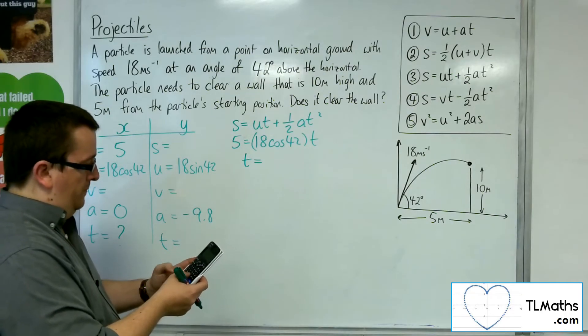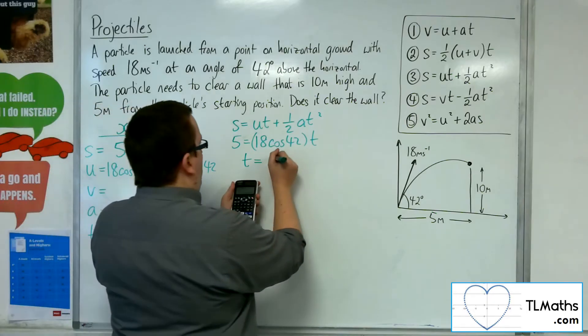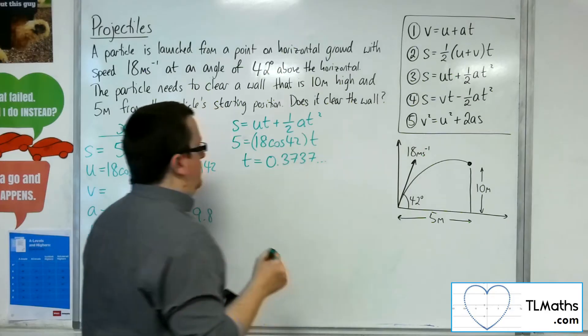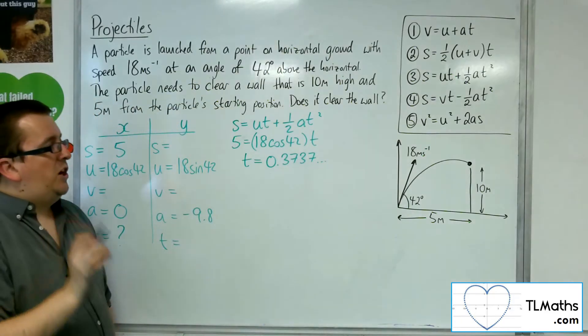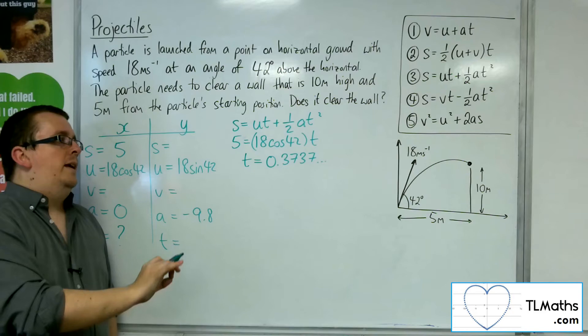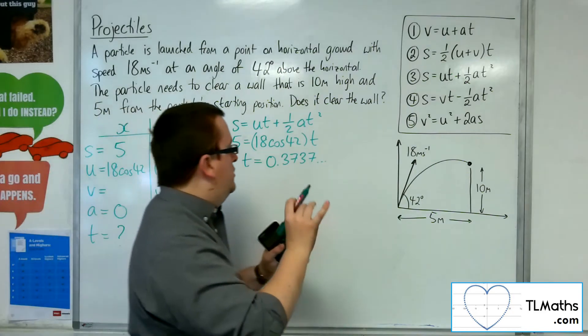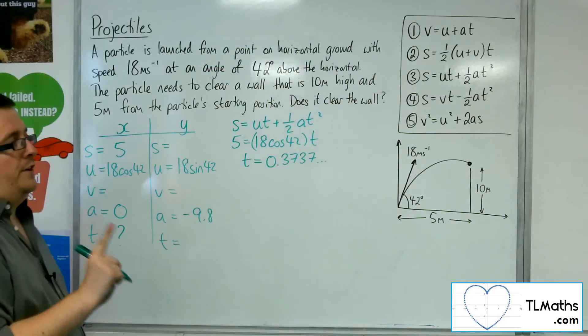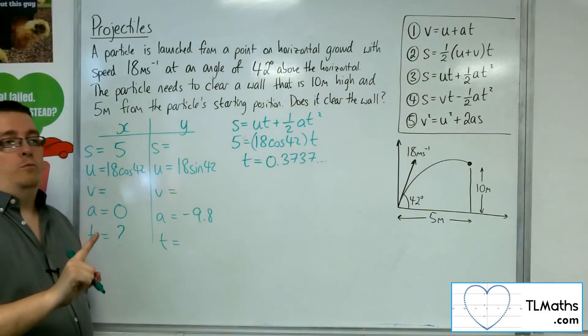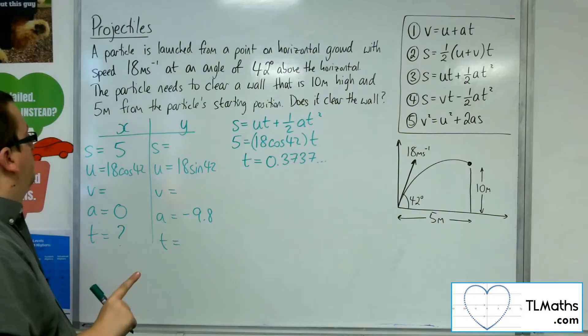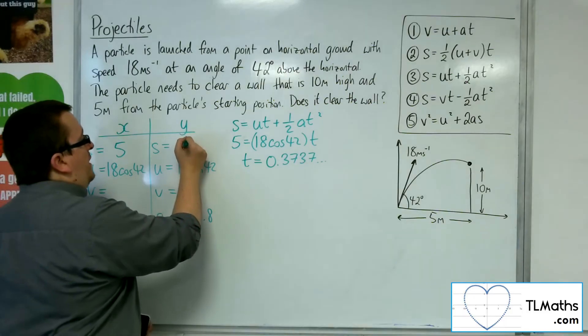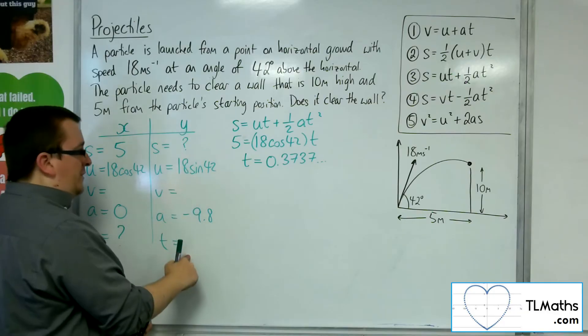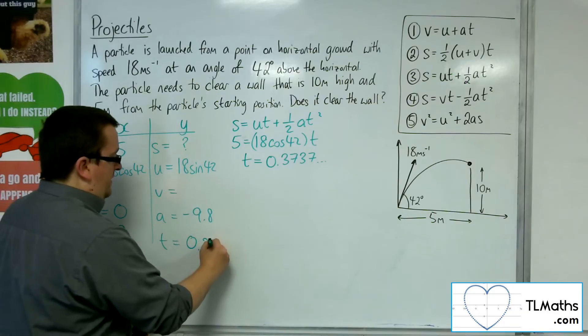So that means that the T is 5 divided by 18 times cos 42, and that gives me 0.3737, etc. So that is the time the particle takes to reach 5 metres horizontally. Now I need to figure out how high the object is at that time.